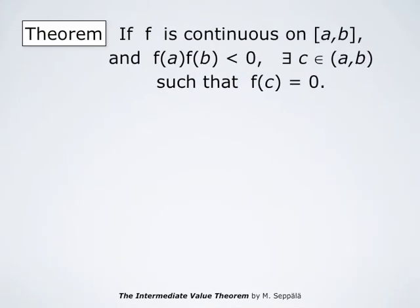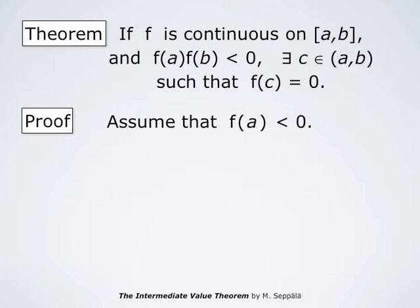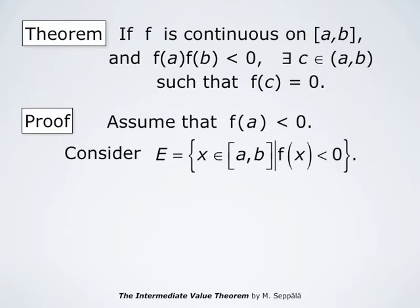Next we prove Bolzano's theorem. The statement is that if f is continuous on the closed interval from a to b, and if f(a) times f(b) is negative, then there is a number c between a and b such that f(c) = 0. For the proof, we first observe that it suffices to prove the result in the case that f(a) is negative. If f(a) is negative, then f(b) is positive by the condition that f(a) times f(b) must be negative. If f(a) is positive and f(b) negative, then we replace f by negative f. So without loss of generality, we may assume f(a) is negative. We consider the set E consisting of those points x in the interval from a to b for which f(x) is negative.